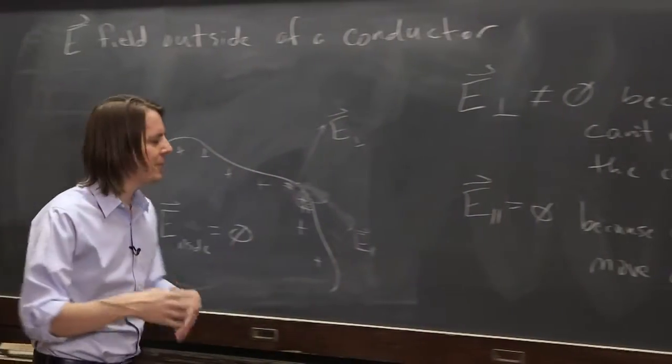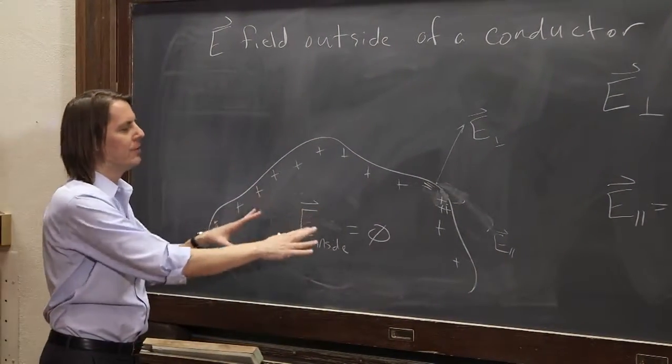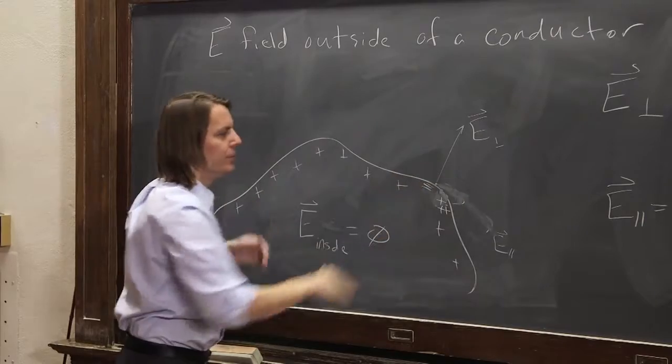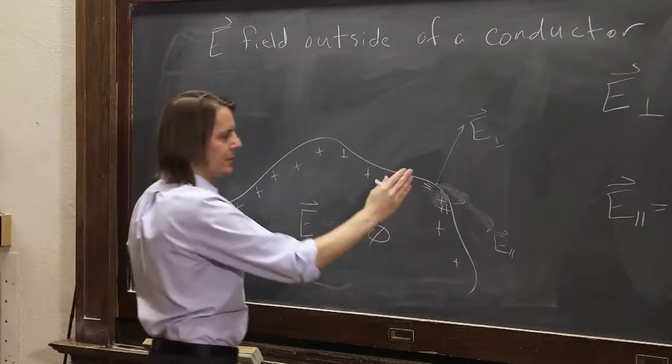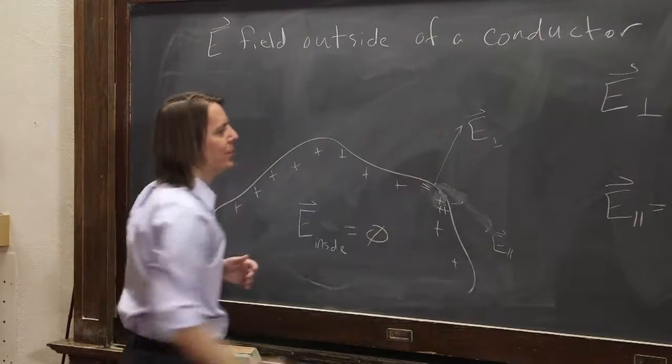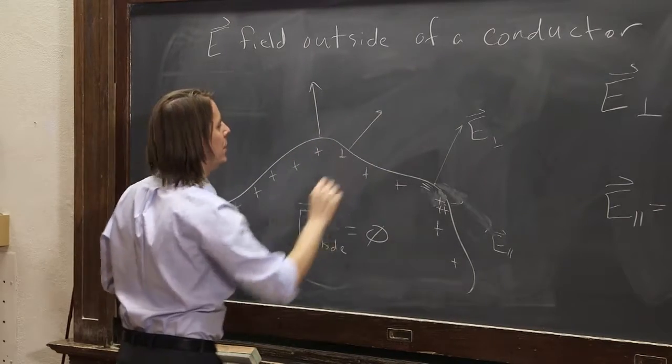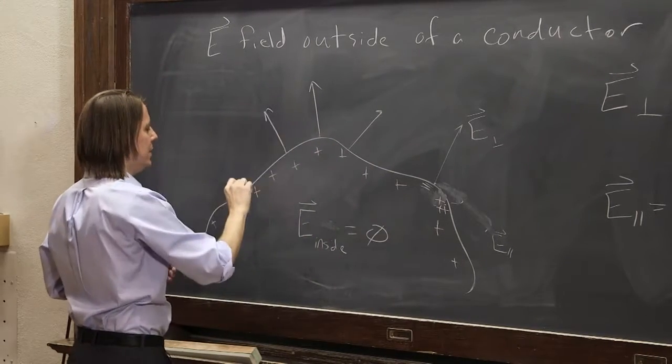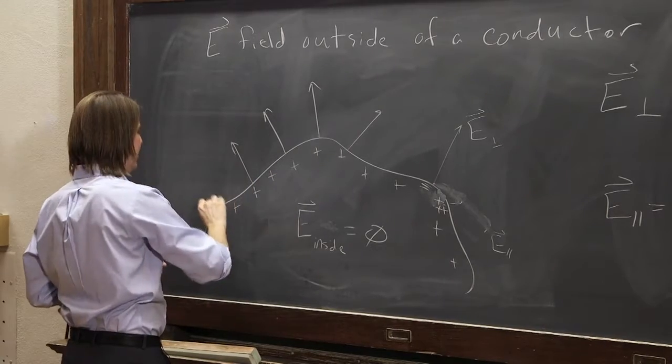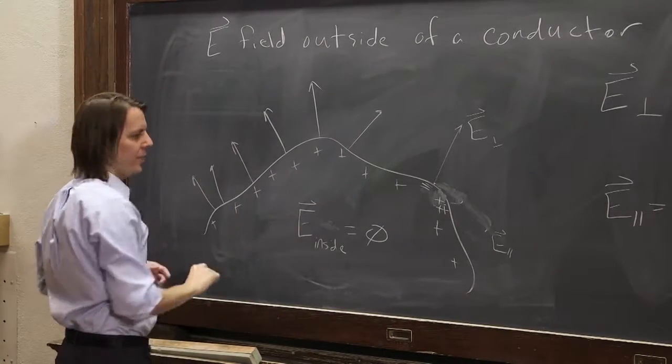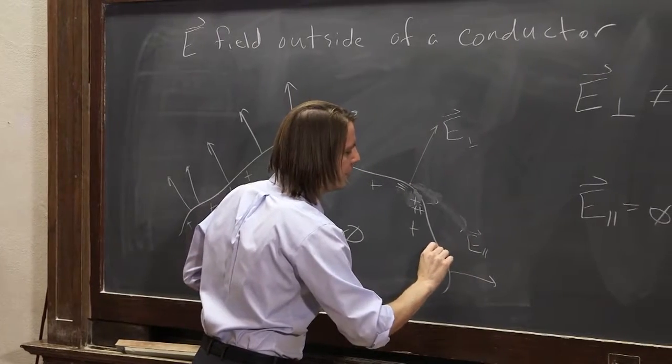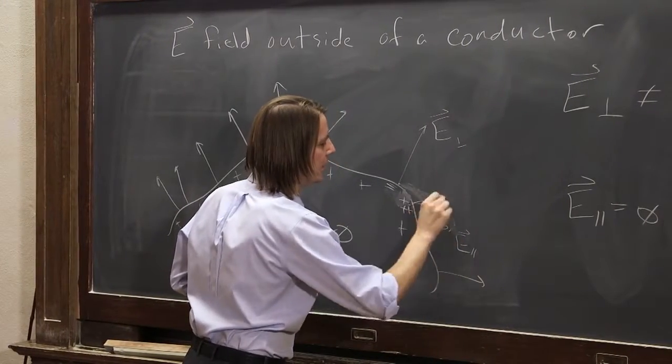So it's the same argument, the same idea for why the field is zero inside also occurs for the field just outside. It's just what you'll end up with is only the perpendicular field can exist. So if you look at the field of this charged conductor, in this case, the field lines will all be perpendicular. Here it's kind of going off that way, here it's kind of going off that way, so it's easy to draw the field around a charged conductor.